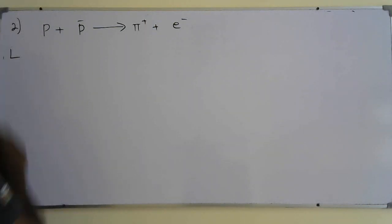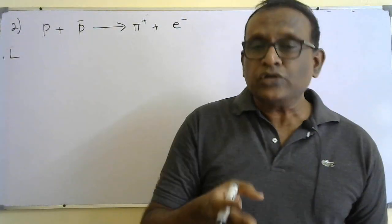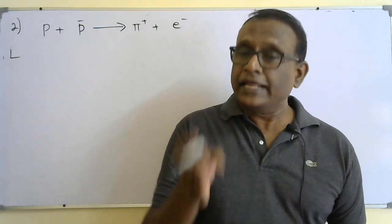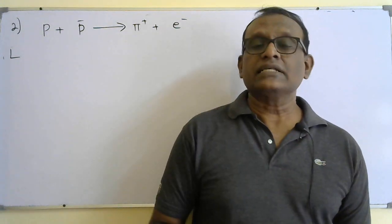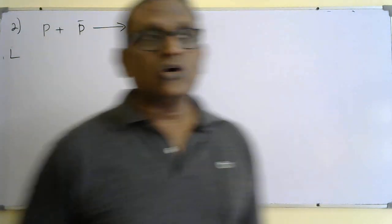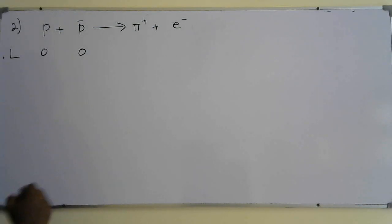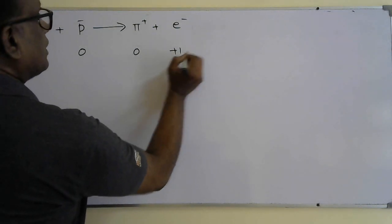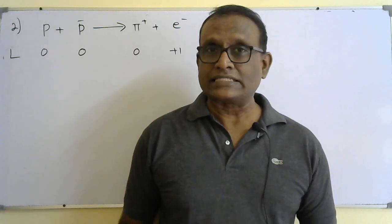But checking lepton number: for any quark it is zero, so mesons and baryons all have lepton number zero. For leptons, lepton number is +1; for anti-leptons, −1. Proton lepton number zero, antiproton zero, baryon zero — but the electron has lepton number +1. Lepton number is not conserved, so answer C is not acceptable.